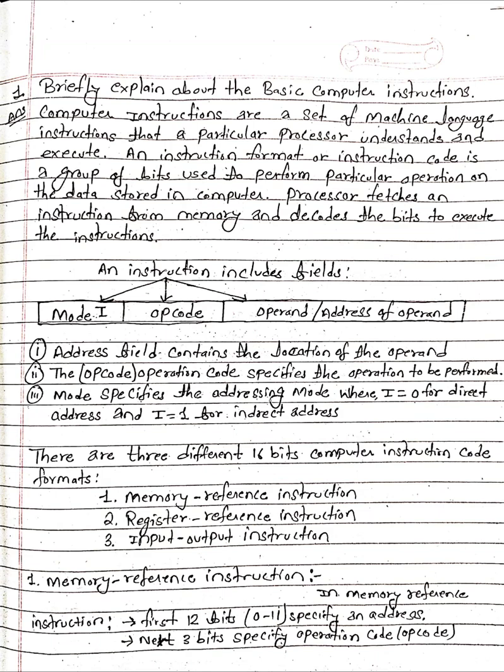Processor fetches an instruction from memory and decodes the bits to execute the instruction. An instruction includes fields: mode, opcode (operation), operand, and address of operand.